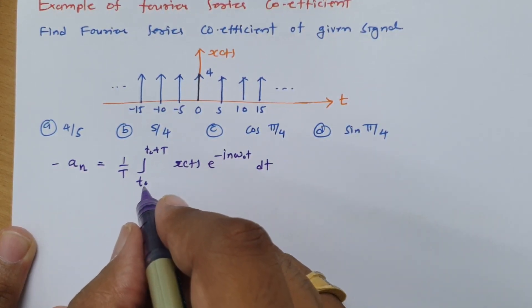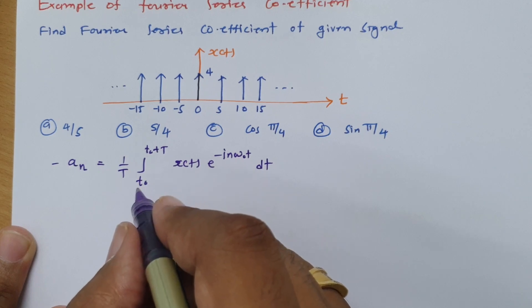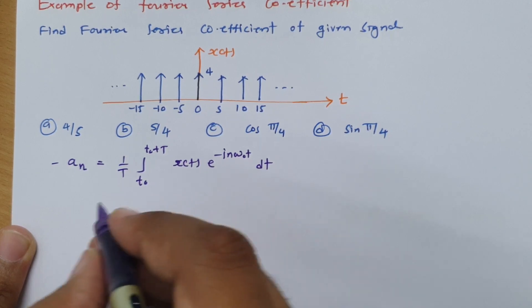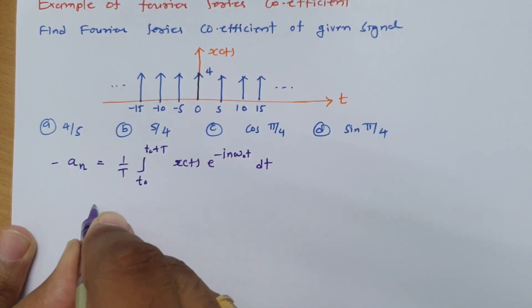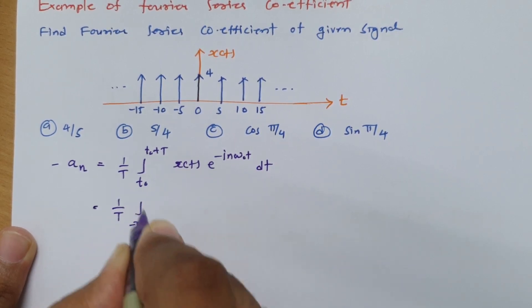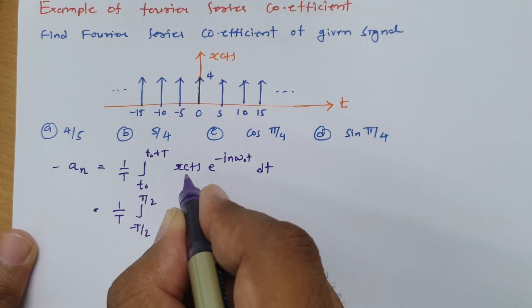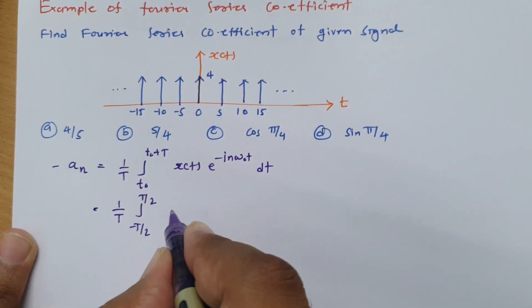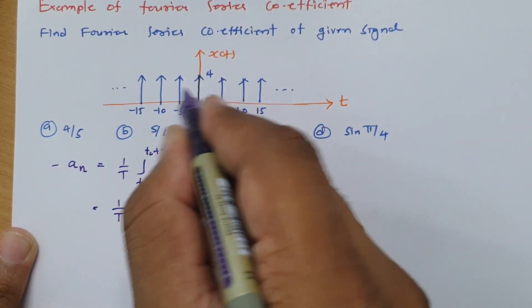If I place t_0 as minus T by 2, then this formula will change to 1 by T, minus T by 2 to T by 2, and x of t is the impulse train.